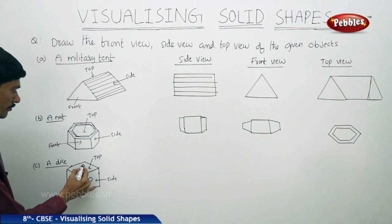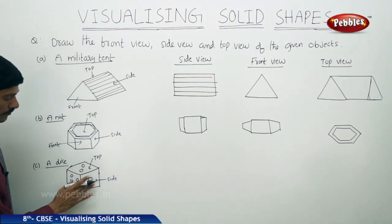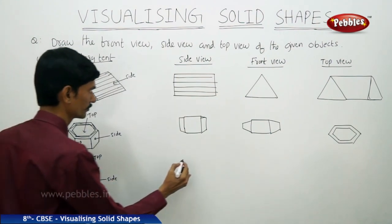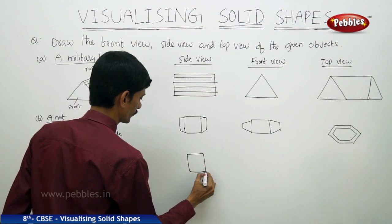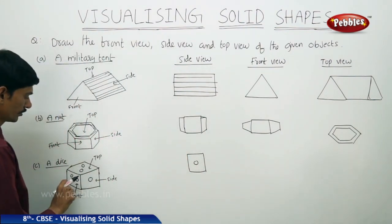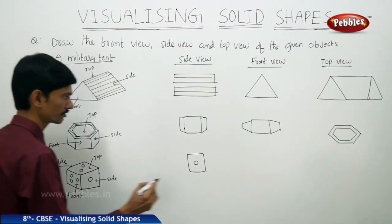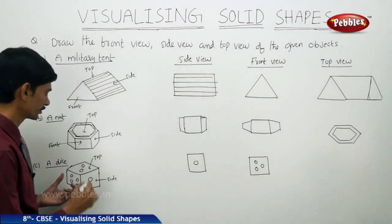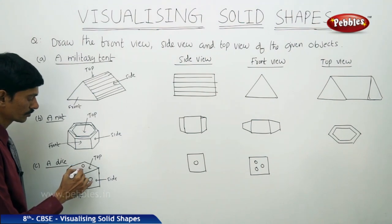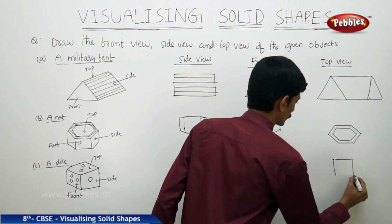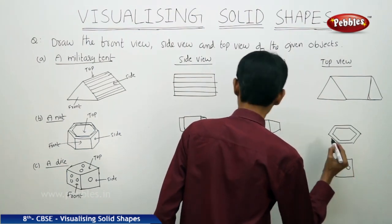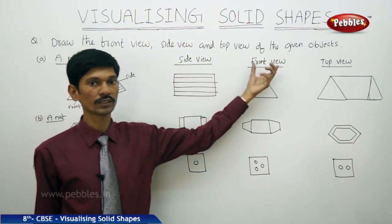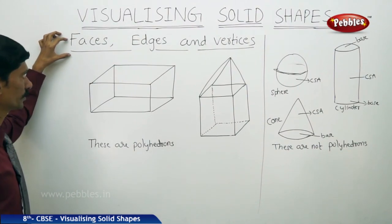For a dice with circles on each face: from the side we see a square with a single circle, from the front we see a square shape with three circles on the face, and from the top we see a square with two circles. So for any solid shape, we can show its side view, front view, and top view.